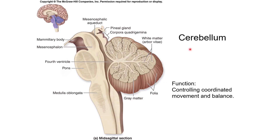The third part of the hindbrain is the cerebellum — a small structure towards the back and ventral side of the brain. This structure is involved in the control of coordinated movements and maintaining balance. So if you are walking or running, these neurons are being used, and there is a very high density of neurons in this area. In fact, some estimates say the cerebellum contains more neurons than the rest of the brain combined, even though it occupies only about 10% of the brain's volume.